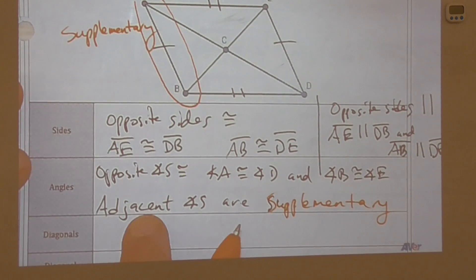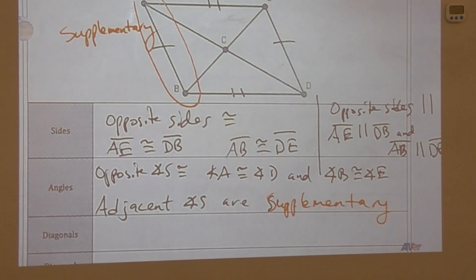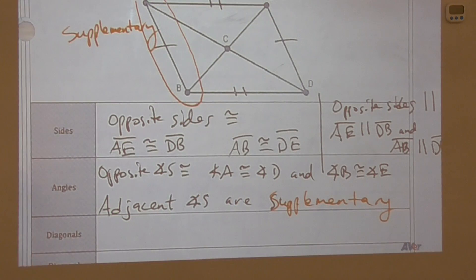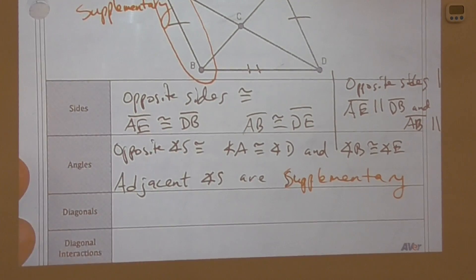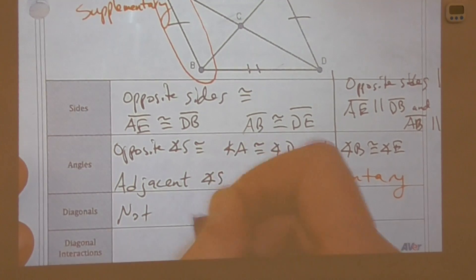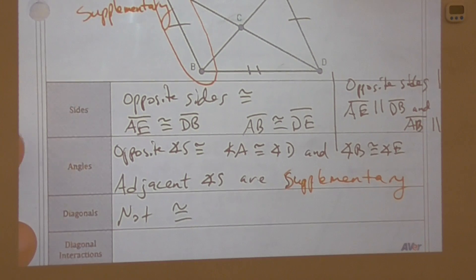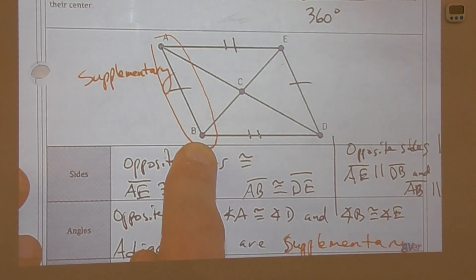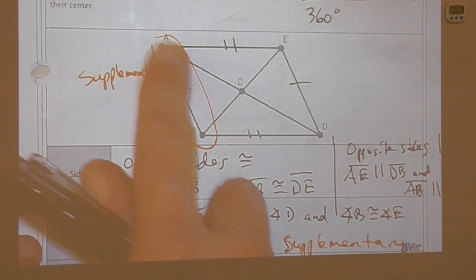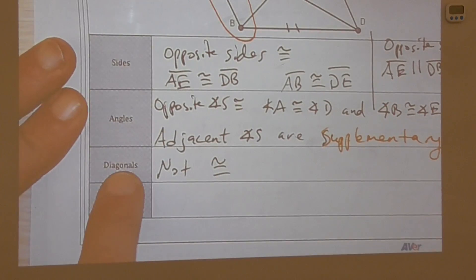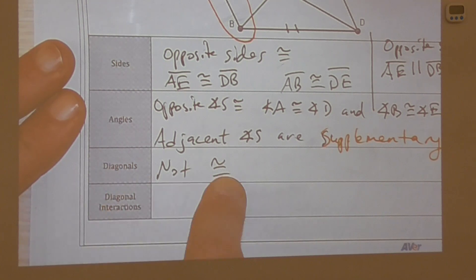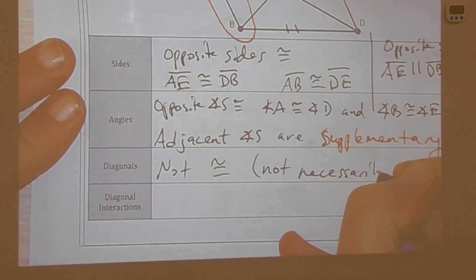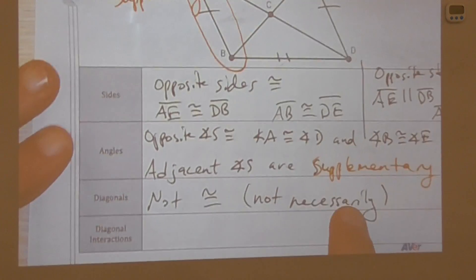Now the diagonals: diagonals AD and EB are not congruent. AD is a longer diagonal and EB is a shorter diagonal. So the diagonals are not congruent — or more precisely, not necessarily congruent — because there are some special parallelograms where they are congruent, which you'll see in the coming days.